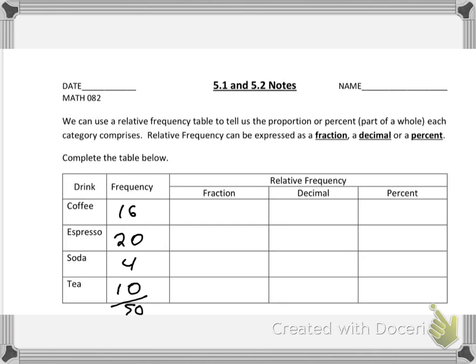So remember, our total is 50. So if we express our number of coffee drinkers as a fraction, we would get 16 over 50. Now in statistics, unlike the rest of algebra, we don't always have to reduce our fractions. In fact, if you leave it this way, it's more informative because 16 people ordered coffee out of a total of 50.